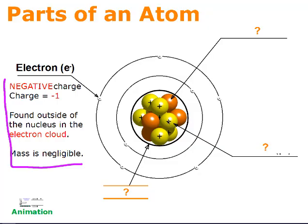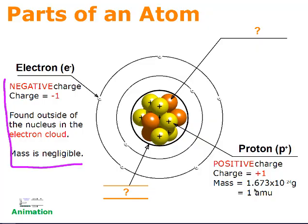Next we have the proton, which has a positive charge and a mass of 1.673 times 10 to the negative 24th grams. That's such a small number that we use a different unit for subatomic particles and the mass of atoms — we say one amu, which stands for atomic mass unit. You don't need to know the mass of a proton in grams; you should know it in amu's. Make sure you have this written in your notes.